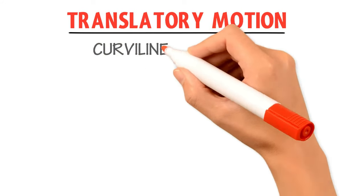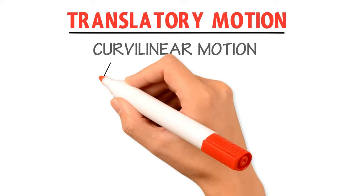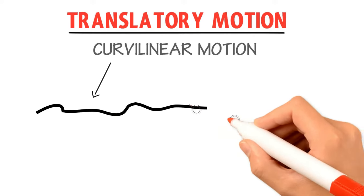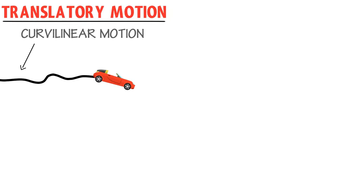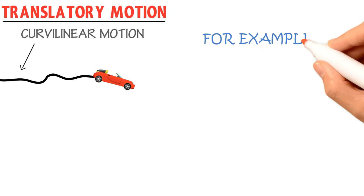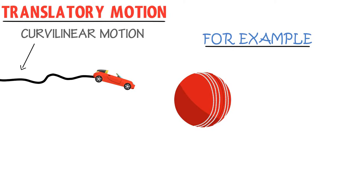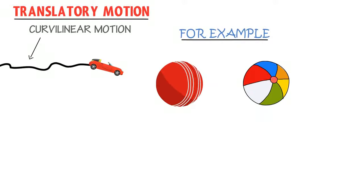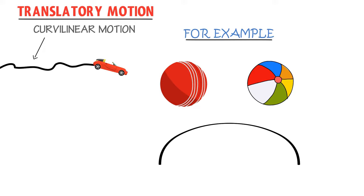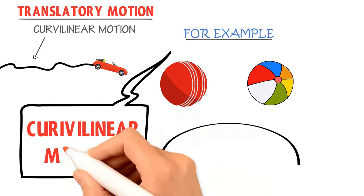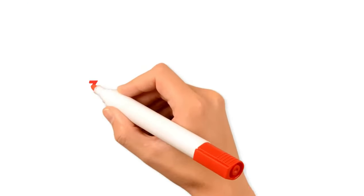The second type of translatory motion is curvilinear motion. The word curvilinear gives us the idea of a curved path. Hence, the motion of a body along a curved path is called curvilinear motion. For example, the motion of a cricket ball in air and the motion of a football in air — these two objects move in a curved path, and when a body moves in a curved path without any rotation, we call it curvilinear motion.